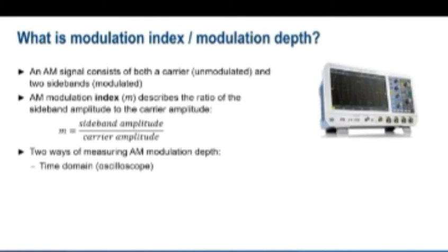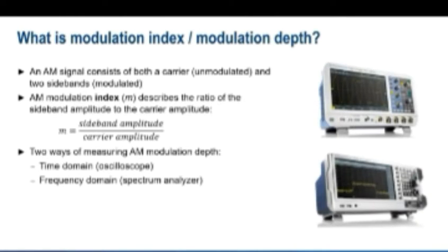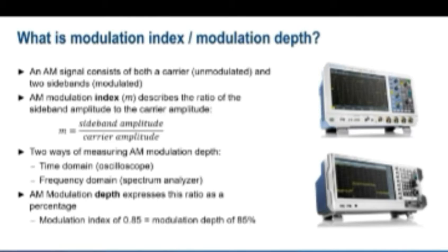We can measure the AM modulation index using two different types of instruments: an oscilloscope to measure modulation index, or a spectrum analyzer to measure modulation index in the frequency domain presentation. Note that you may also hear the expression AM modulation depth. That is the modulation index expressed as a percentage. An AM modulation index of 0.85 is the same thing as an AM modulation depth of 85 percent.